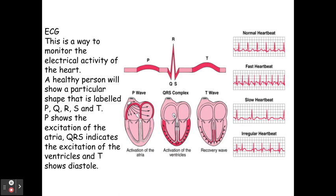The trace of an electrocardiogram looks like this, where you have a P wave, then a QRS wave, and a T wave. The P wave is representative of atrial systole, QRS is representative of ventricular systole, and the T wave is representative of diastole.